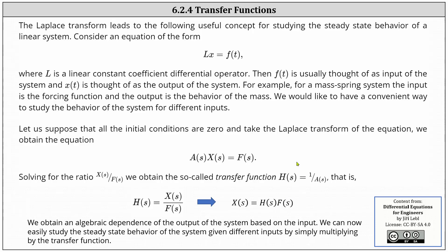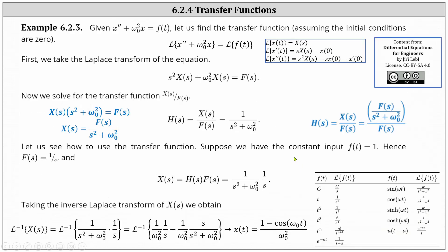Let's take a look at an example. We are given x double prime plus omega sub zero squared x equals F of t, where we have to find the transfer function assuming all initial conditions are zero.